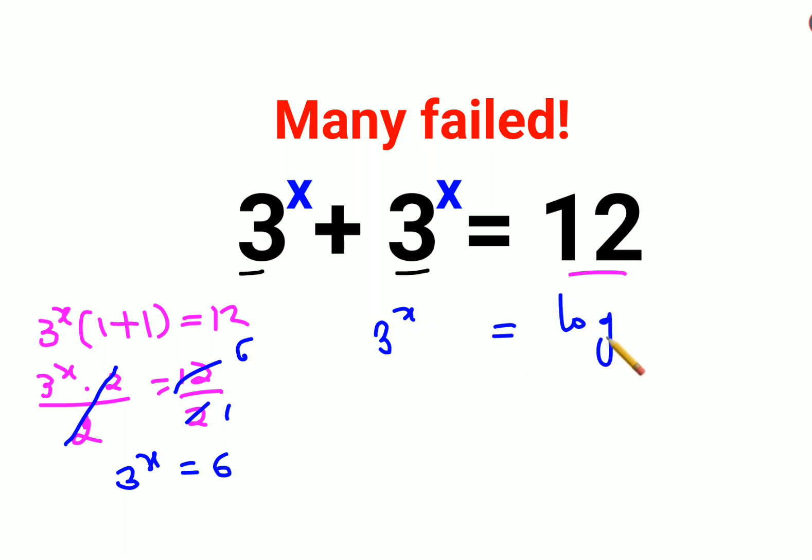So what you should do is you will apply log on both sides. Now log of a raised to m can be written as m log a. So this can be written as x log 3 equals to log 6.